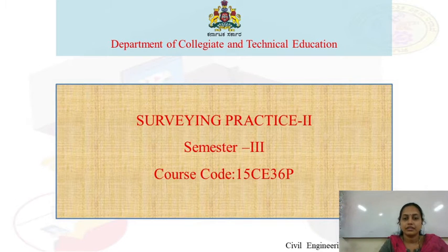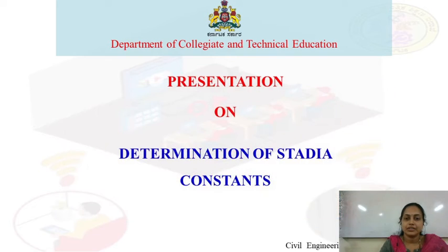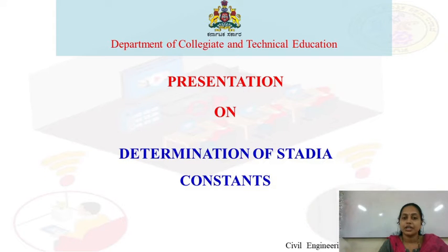Hello everyone, welcome to LMS. Today's session is determination of stadia constants. Stadia constants are also called tachymetric constants. There are two types of tachymetric constants: one is multiplying constant denoted by K, and another one is additive constant denoted by C.